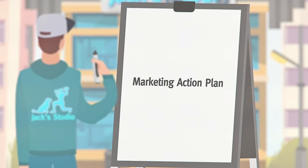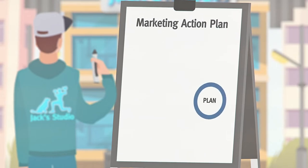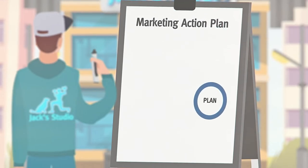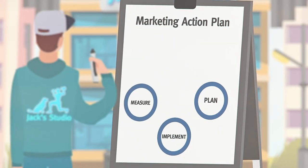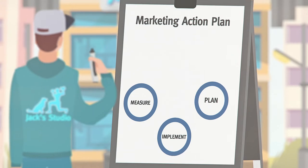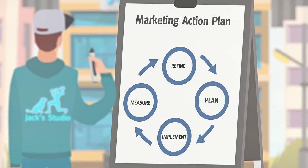A marketing plan will be implemented repeatedly and change over time. The stages in this process are: 1. Write your marketing plan based on your strategy document. 2. Implement marketing tactics. 3. Measure against key performance indicators. 4. Refine your marketing plan to repeat what worked well and to change what didn't.